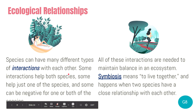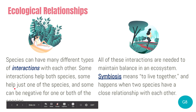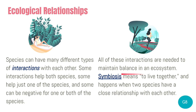The next subtopic is ecological relationships. In an ecosystem, species can have many different types of interactions with each other. Note: the word 'species' is always written and pronounced in its plural form. It refers to a group of organisms so closely related that they can interbreed and produce fertile offspring. Some interactions help both species, some help only one, and some are negative for one or both. All these interactions are needed to maintain balance in an ecosystem, and we call this symbiosis — meaning 'to live together.'